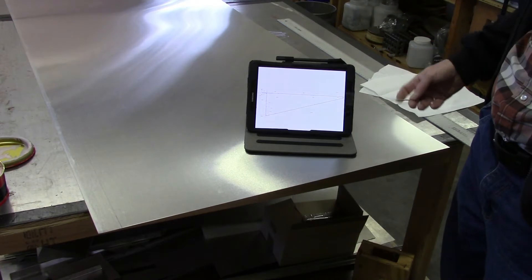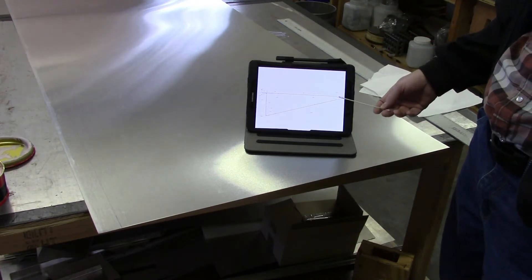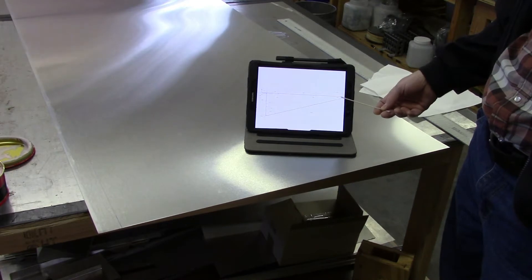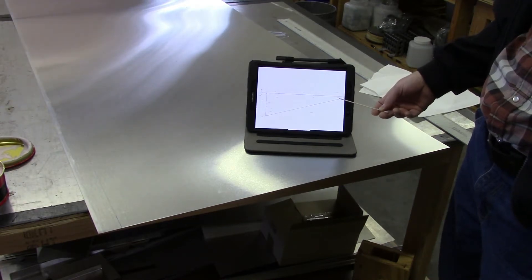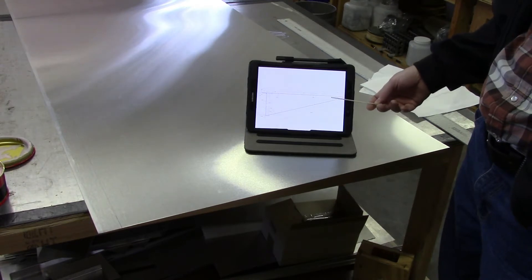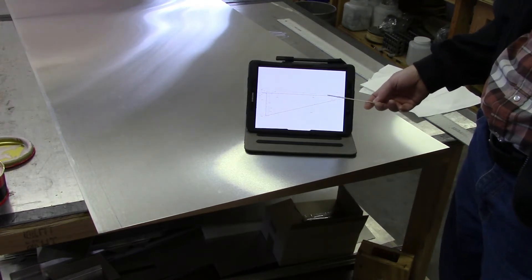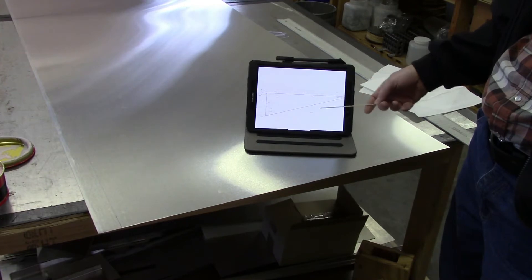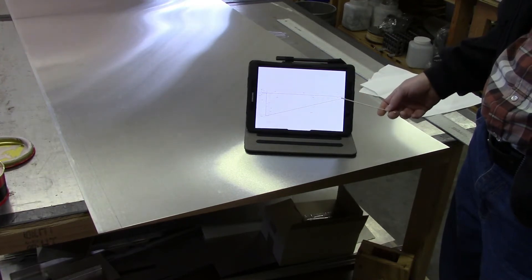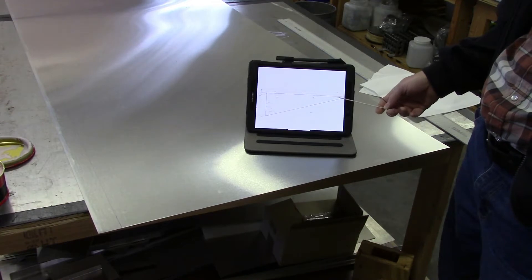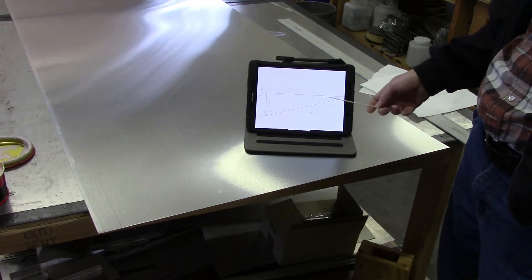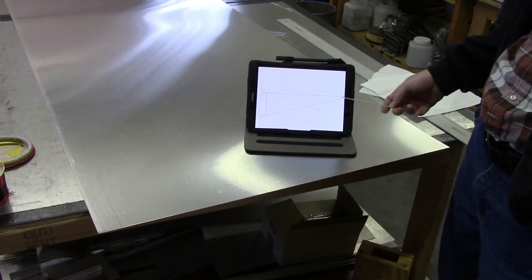One thing I have to be particularly careful of, since this is 016, is making sure that this radius doesn't get crushed. In one of my tests, I actually did crush this a little bit in spite of having the rubber pad inside there. Essentially the rubber pad crawled up while I was trying to do the outside bend and crushed this down at the test section.